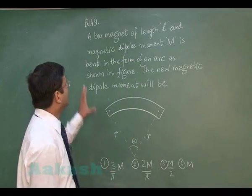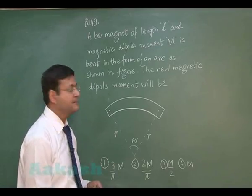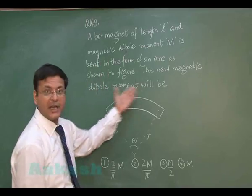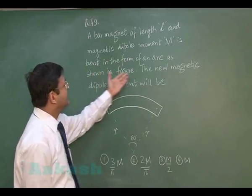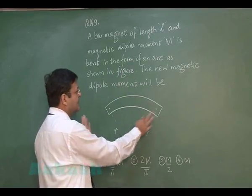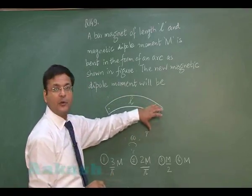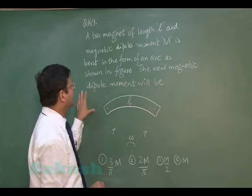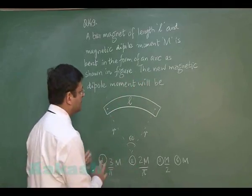In question 149, based on magnetism and matter, you have been given a bar magnet of length l — the entire length is l — and magnetic dipole moment m. It is bent in the form of an arc, as shown in the figure. The new magnetic dipole moment will be determined.